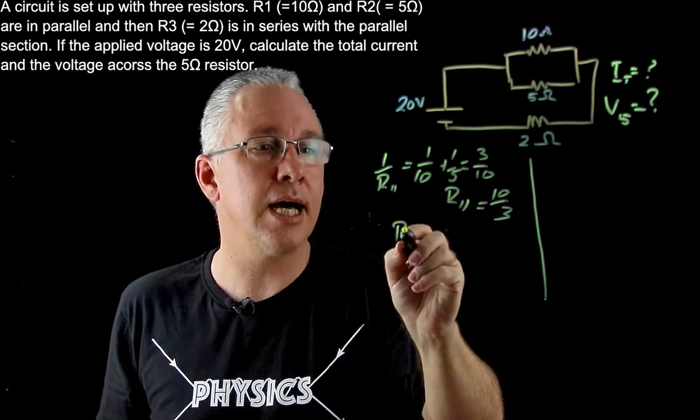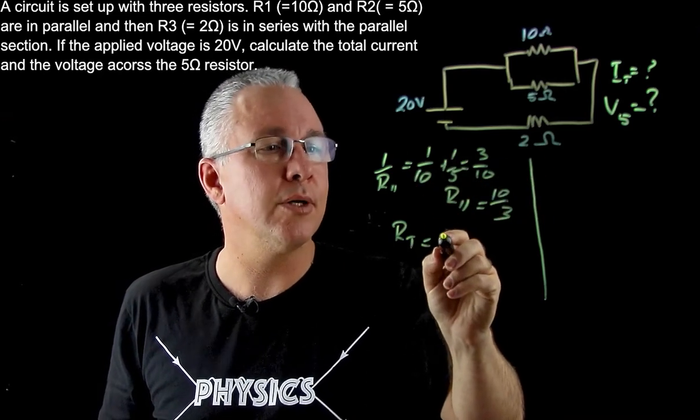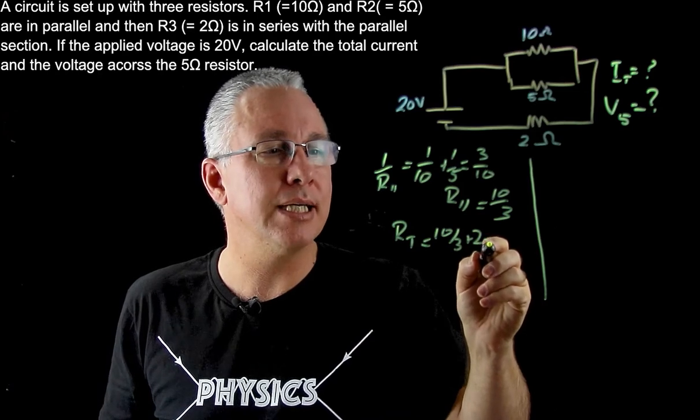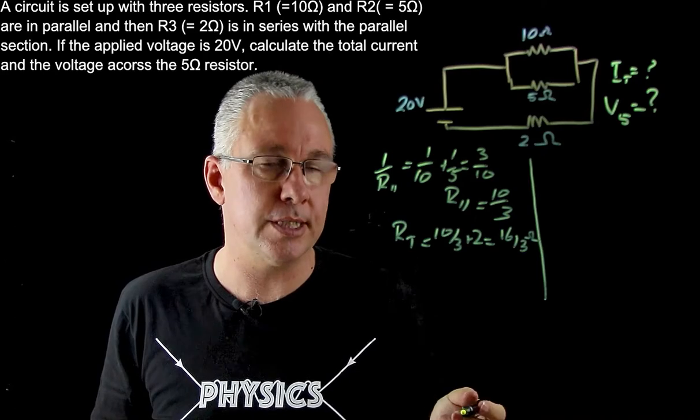That means my total resistance RT is simply that plus 2. So I get 10 over 3 plus 2, which becomes 16 over 3 ohms. That is my total resistance.